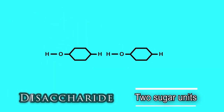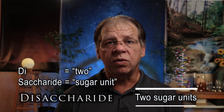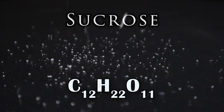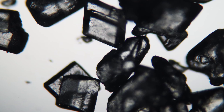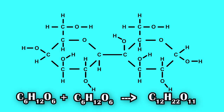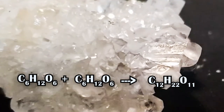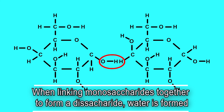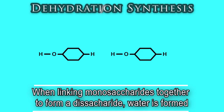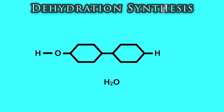A disaccharide is formed when two monosaccharides are joined together — almost like they're holding hands. Di means two, saccharide means sugar: disaccharide, two sugar units. Sucrose is a disaccharide with the chemical formula C12H22O11. We take two monosaccharides — C6H12O6 plus C6H12O6 — join them together and get a disaccharide C12H22O11. You might think it should be C12H24O12, but it's missing two hydrogens and one oxygen — that's a water molecule. When you join two monosaccharides to get a disaccharide, a water molecule comes out. We call this dehydration synthesis. Synthesis means to put together, and dehydration means water falls out.